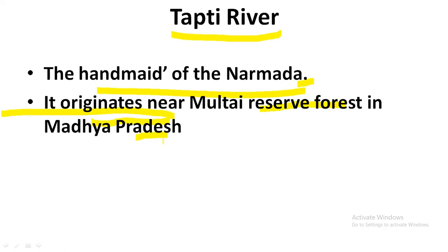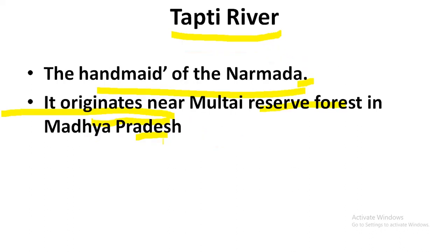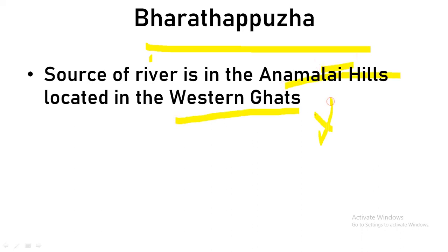Next is Periyar river. Periyar is in Kerala. The source of Periyar is the Anaimalai Hills in the Western Ghats — it is one of the important and longest rivers in Kerala. Periyar originates from the Sivagiri Hills of the Western Ghats.